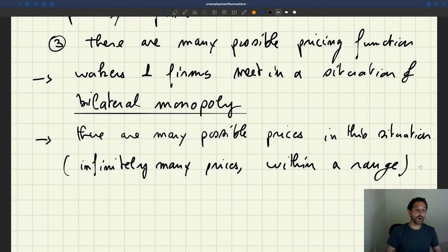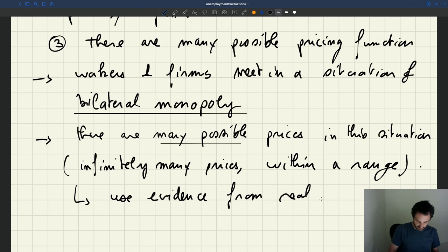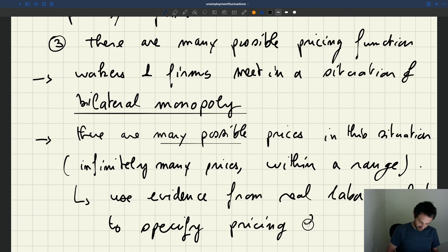There are many things that can happen, and so what we'll do in practice is we are going to look at the real world, try to see a little bit what are the determinants of wages in the real world, and we'll use that to inform the pricing functions that we assume on the labour market. Because in theory many things could happen. So we'll use evidence from real labour markets to specify our pricing function or function that gives a wage between firms and workers.